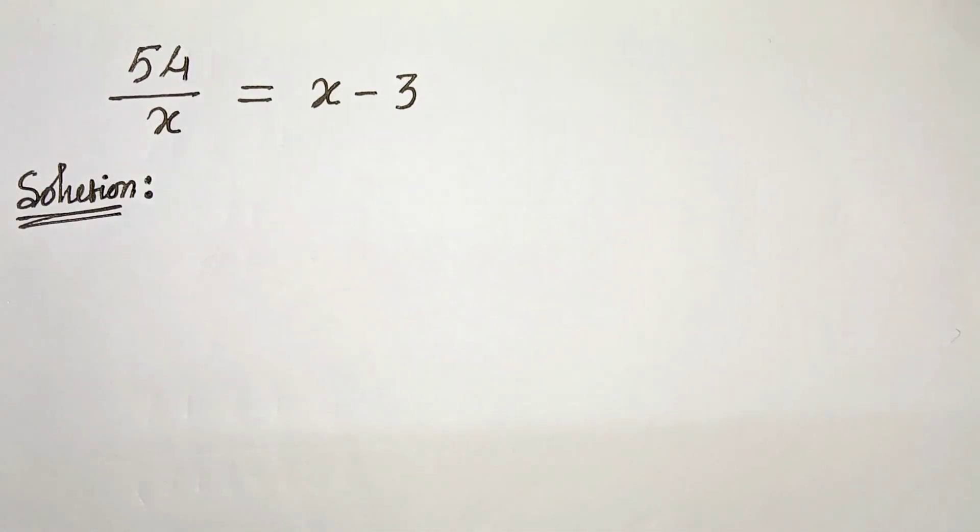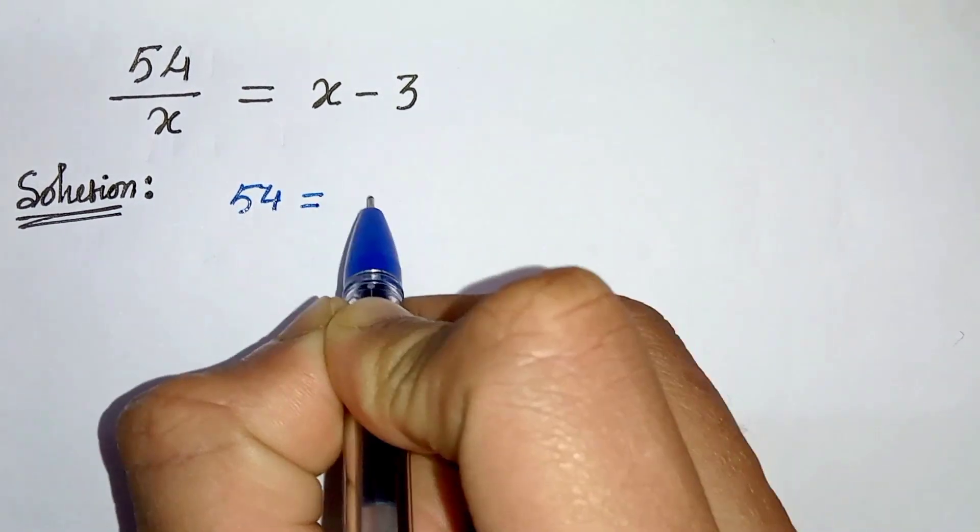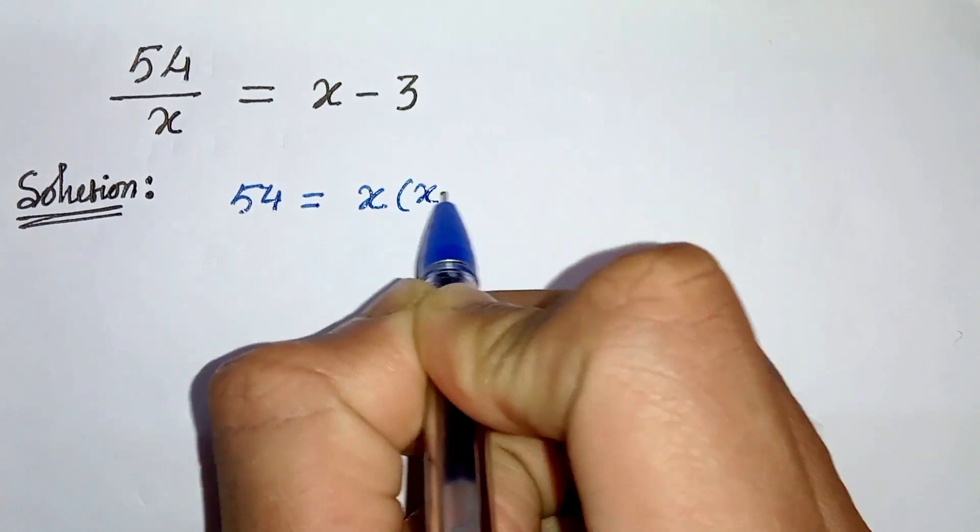First of all, let us multiply both sides by x. So we will get 54 equals x times x minus 3.